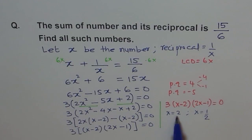So this seems to be the answer. If x is 2, reciprocal will be 1/2. If x is 1/2, reciprocal will be 2. So such numbers are, the sum of number and reciprocal is this, find all such numbers.